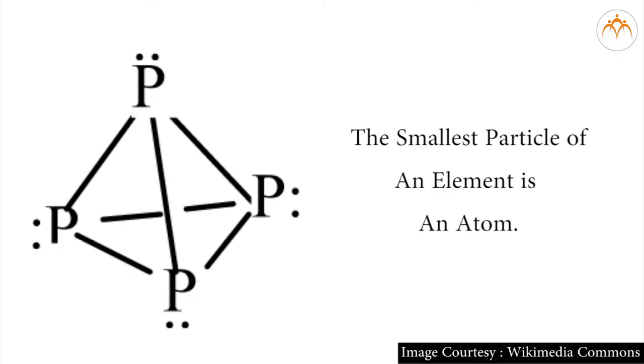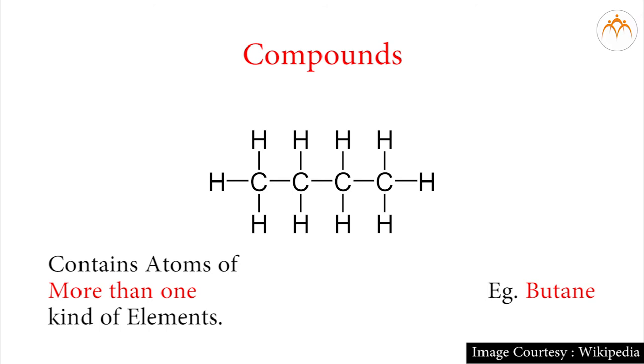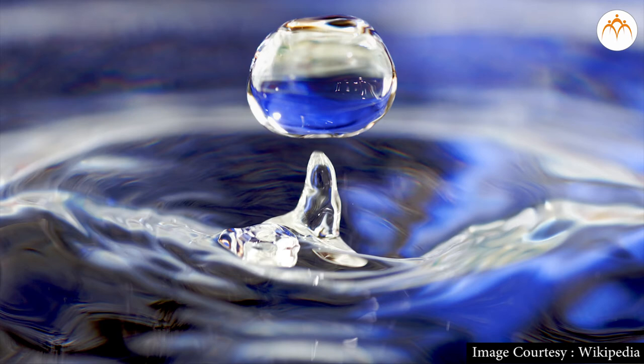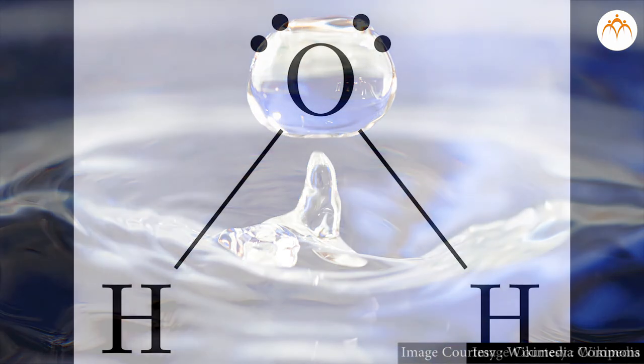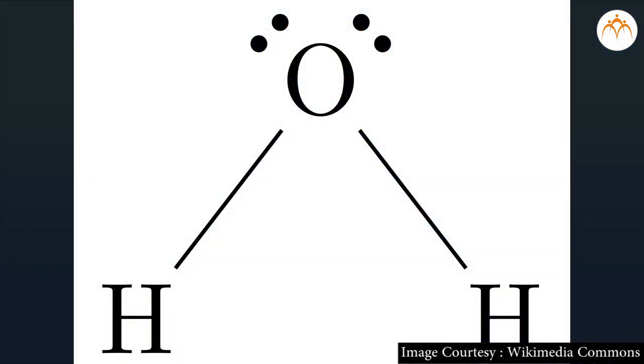Therefore the smallest particle of an element can be called an atom. Compound contains atoms of more than one element. Example: molecule of H2O contains two hydrogen atoms and one atom of oxygen. Therefore smallest particle of any compound is always a molecule.